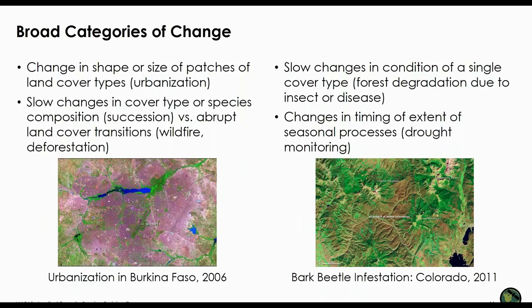There are several broad categories of change you can detect with satellite imagery, including the change in shape or size of patches — urbanization is a great example. Slow changes in cover type are a little more difficult to detect than abrupt changes due to wildfire or deforestation. Slow changes in the condition of a single cover type, like forest degradation due to insects or disease, can be easy or difficult depending on the extent of the damage. Lastly, changes in the timing and extent of seasonal processes such as decreased rainfall and its effects on vegetation can be monitored using satellite imagery.